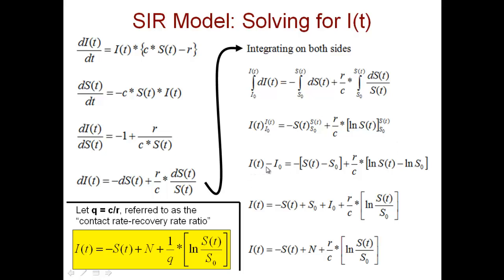So I(t) minus I₀ equals minus S(t) plus S₀. Now you can bring the I₀ to the right side plus I₀ plus r over c times log S(t) divided by S₀. Log a minus log b is log a over b.